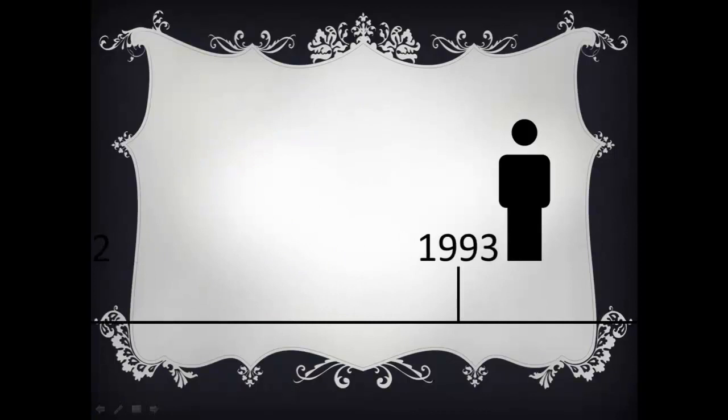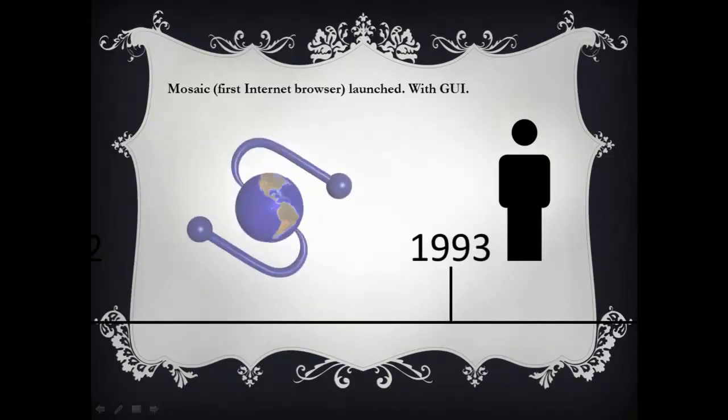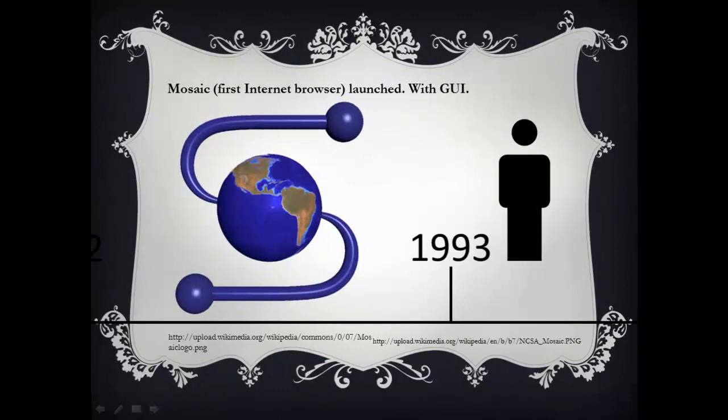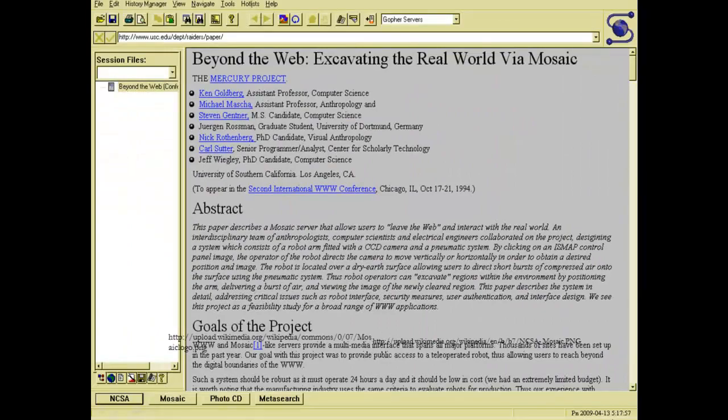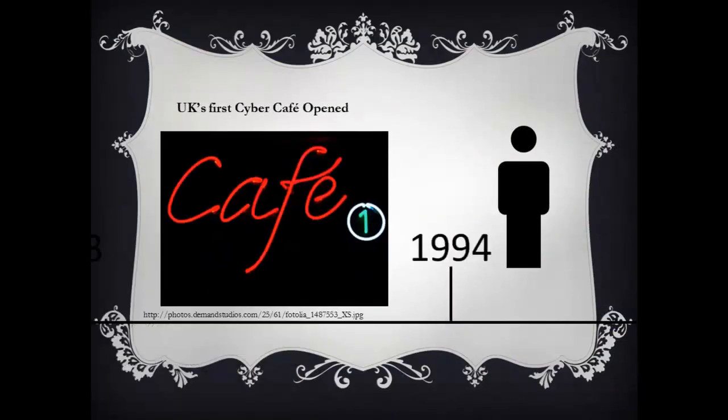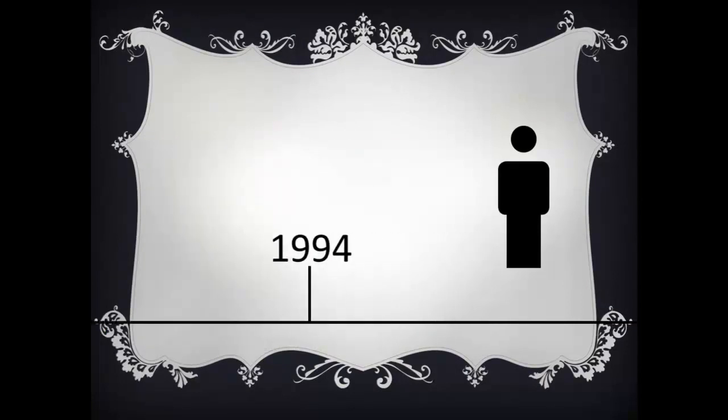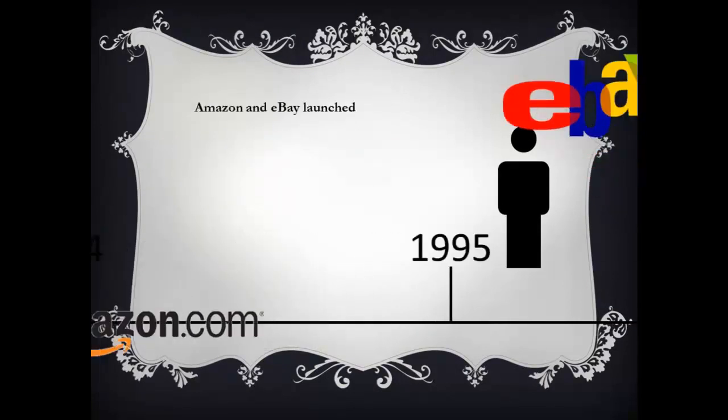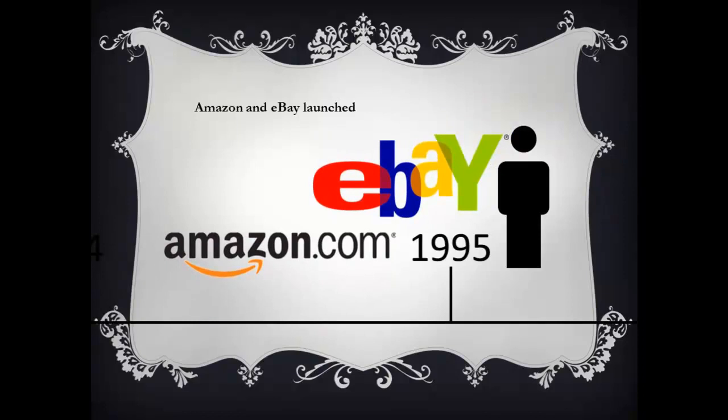In 1993, Mosaic was released, the first commercial software that allowed graphical access to users on the internet. It was the first internet web browser. In 1994, the UK's first cyber cafe was opened. Next year, Amazon.com and eBay.com were launched. They both are the largest online retailers.